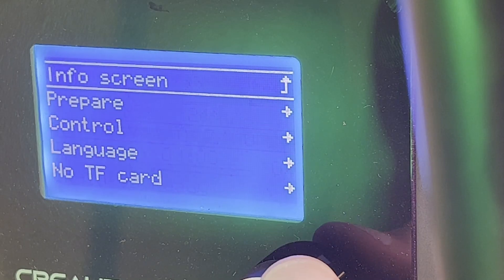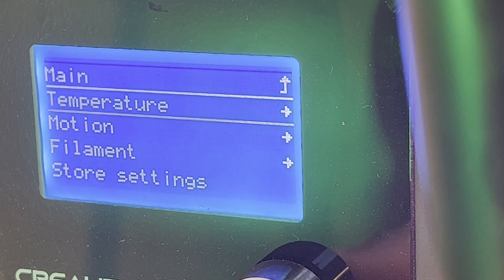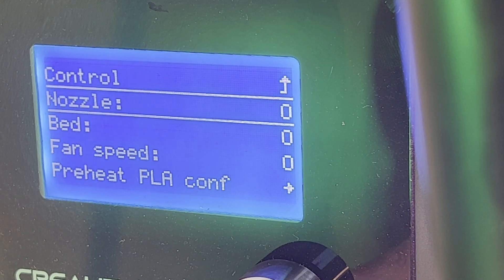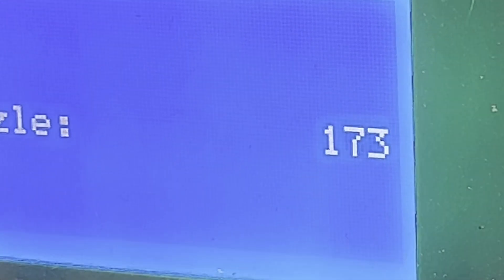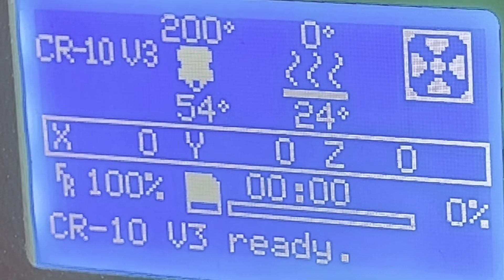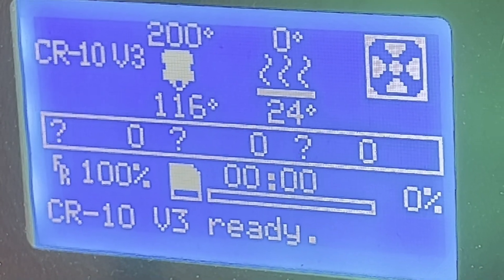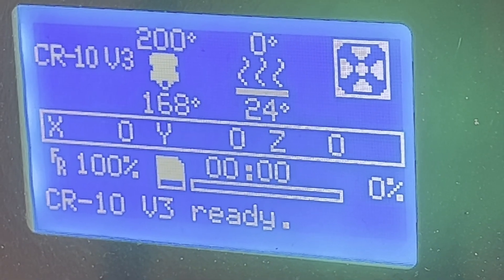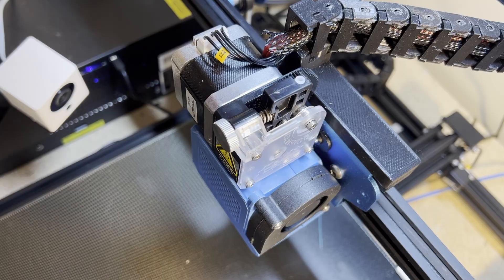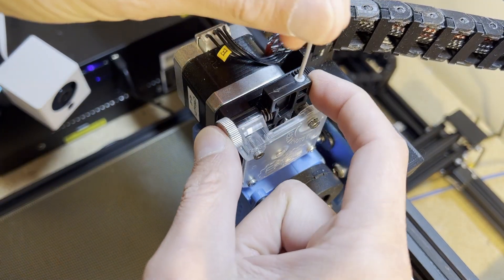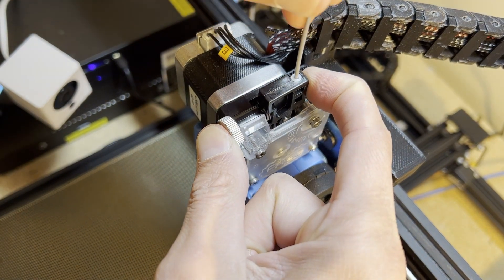Once you've got everything put together, you're going to want to heat up the printer nozzle. Once the nozzle is warmed up, let's load the filament so we can start feeding it through the tool.